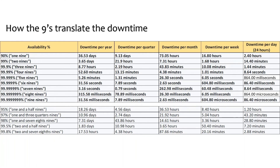The important question is: how do we design for high availability with the nines structure? Even with nine nines there will be a downtime of 32 milliseconds per year, and having a dependency on a single device or node is always risky. To achieve high availability and continuous availability, we need to plan for redundancy, which we can achieve with three basic options: hot storage, warm storage, and cold storage.